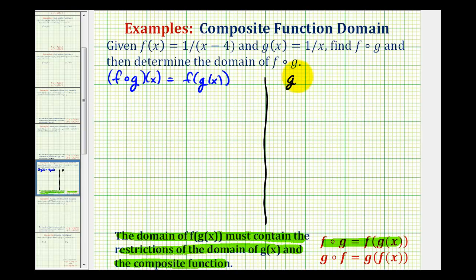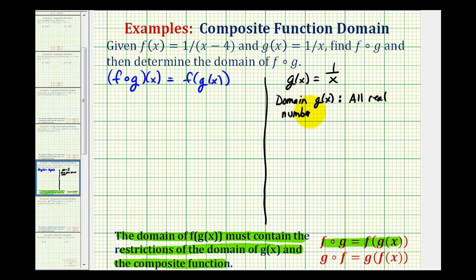Since g of x is equal to one over x, and we know division by zero is undefined, the domain of g of x — our inner function — would be all real numbers except x equals zero. So this means regardless of what our composite function might look like, we must exclude zero from the domain of our composite function. Now let's go ahead and determine our composite function and see if there are more values that we must exclude.